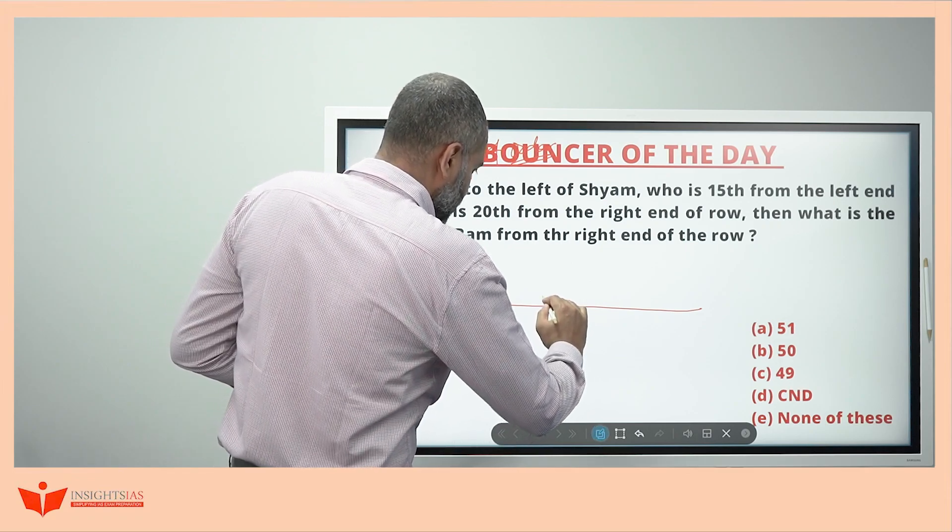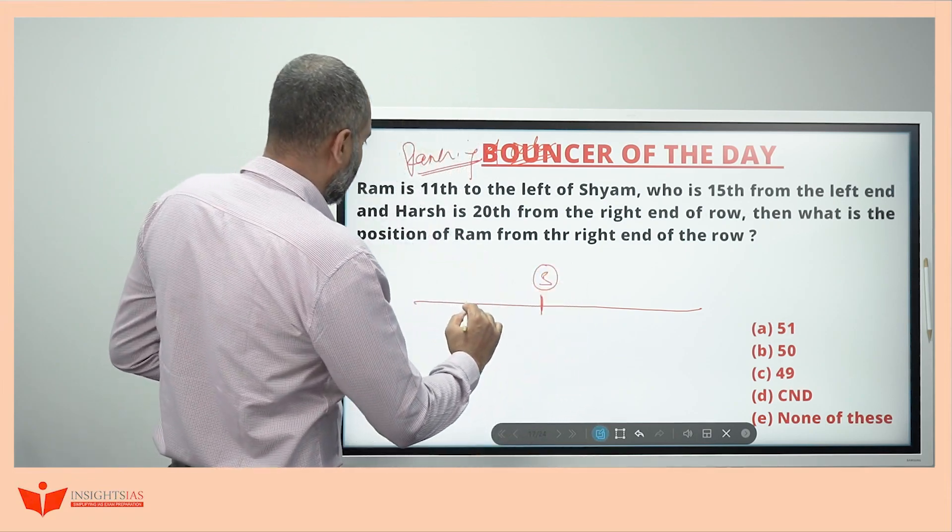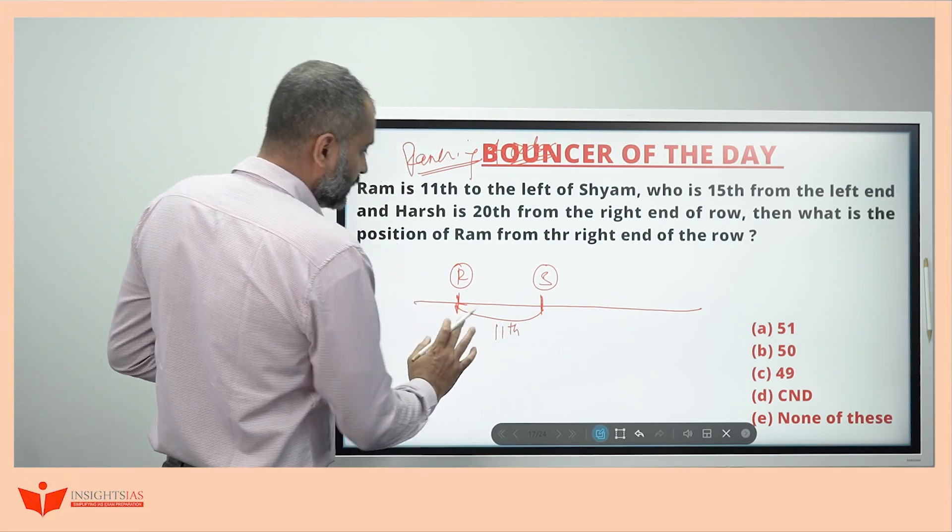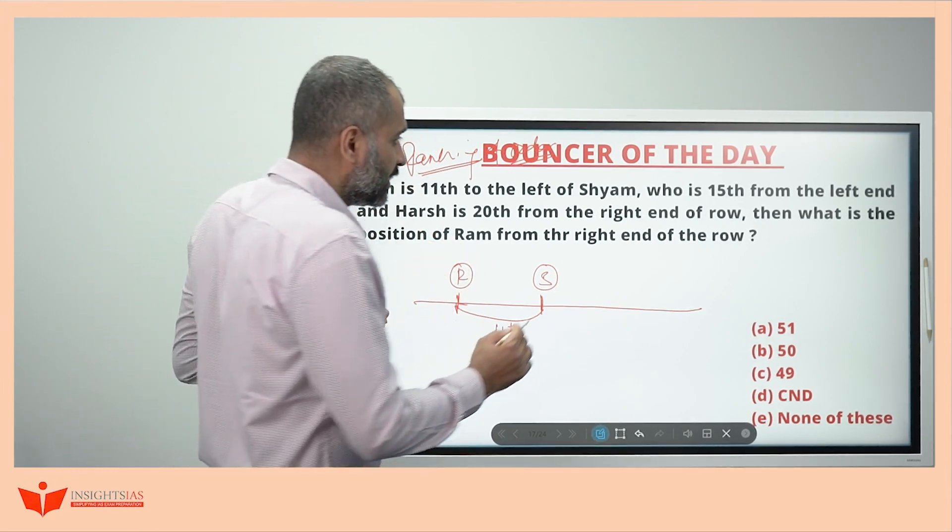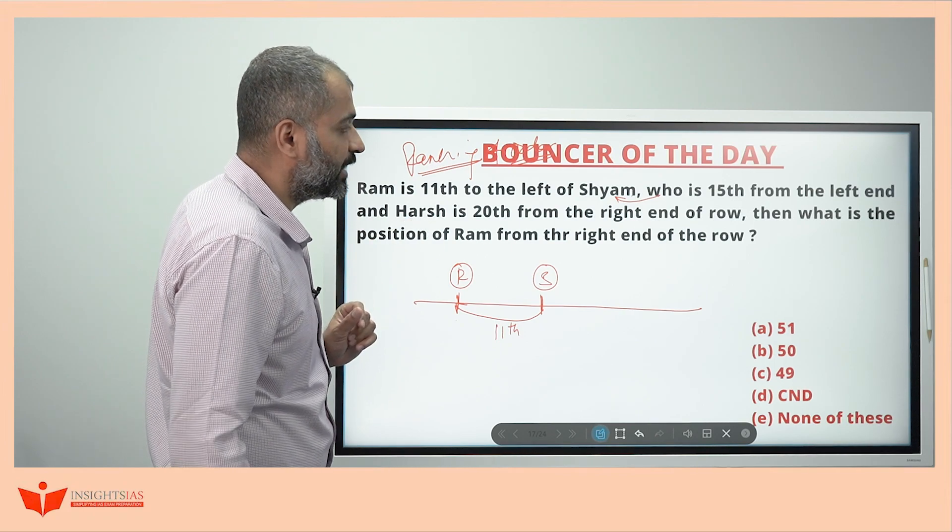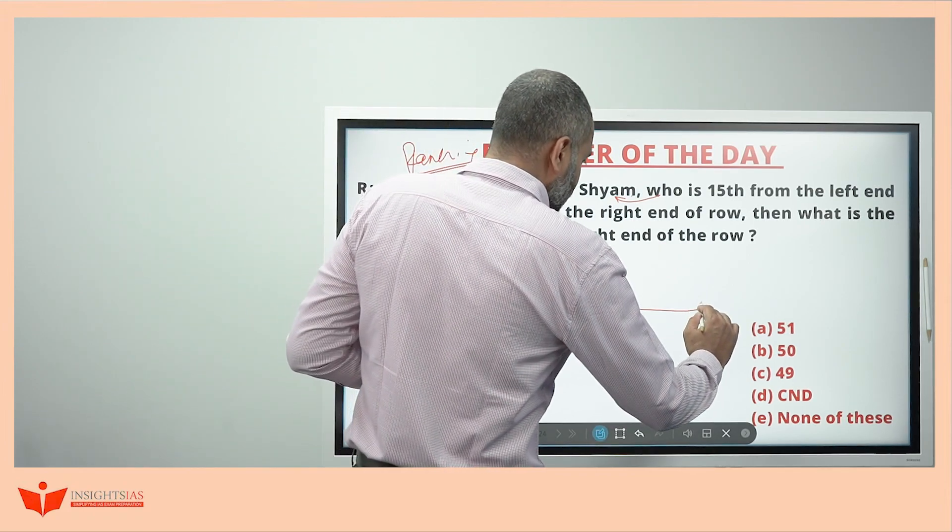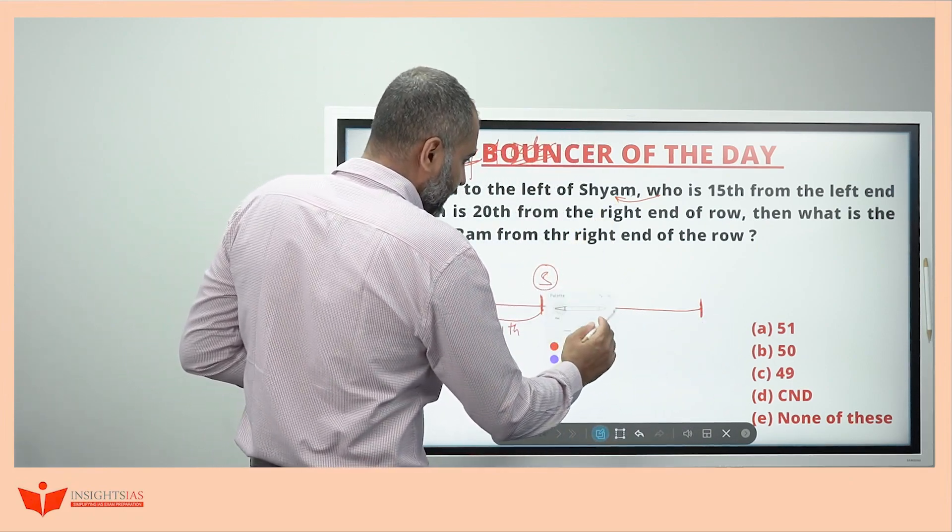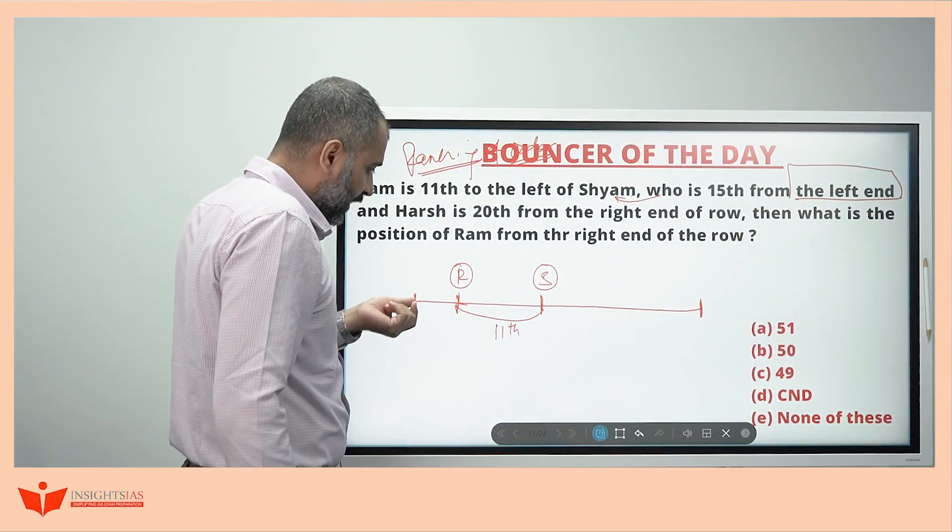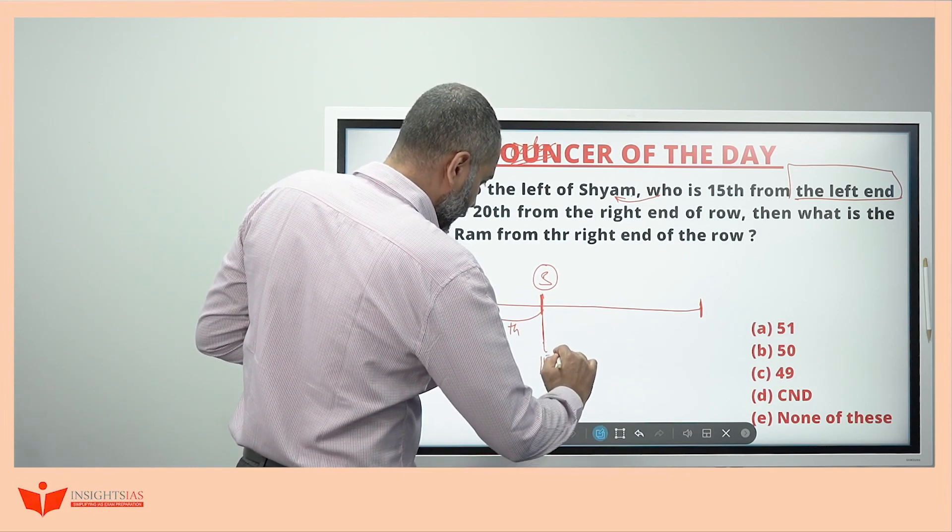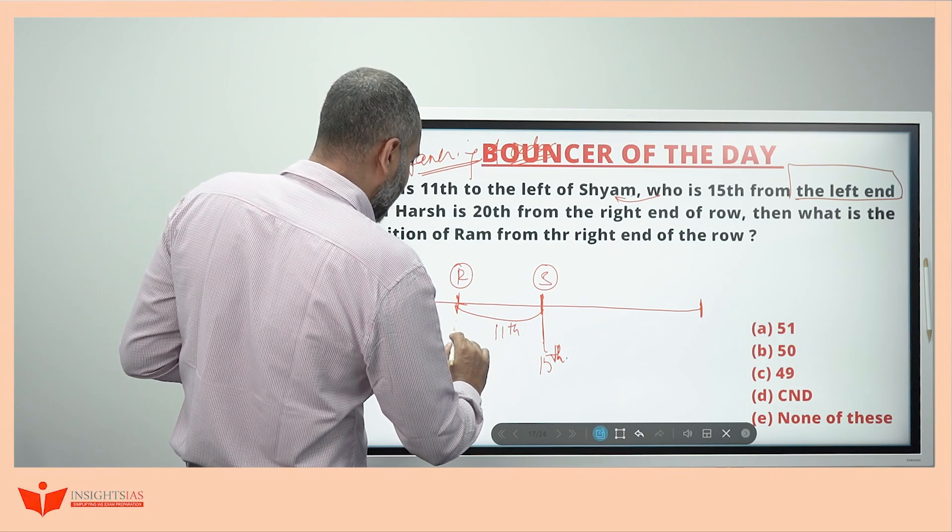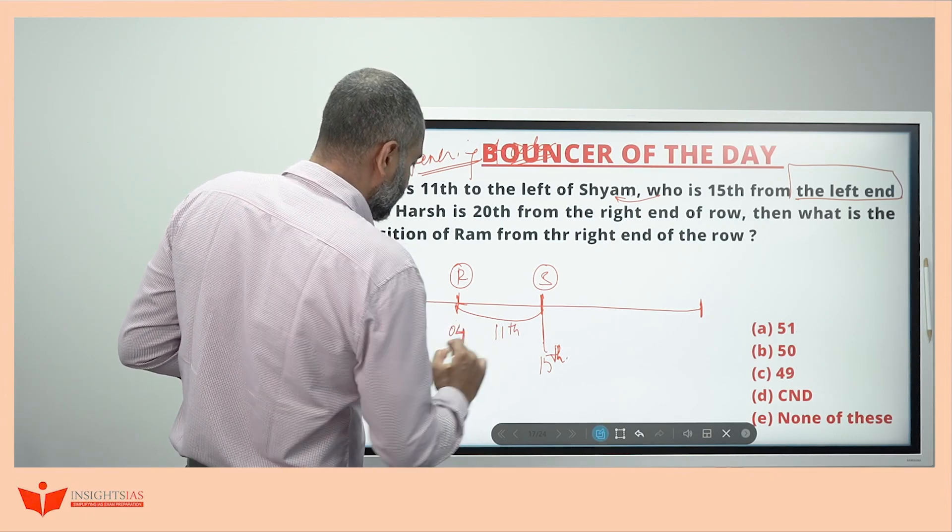Ram is 11th to the left of Sham. This is Sham. Ram is left of Sham, 11th position. From here to here, 11th position. Who is, who means Sham, Sham is 15th from the left end and Harish is 20th from the right end of the row. Who is means Sham is 15th from the left end. This is from the left end. The left end means the left extreme end. If I count from here, he will be 15th. And Ram is 11th to the left means Ram's position I can easily say this is 4th, 4th position.